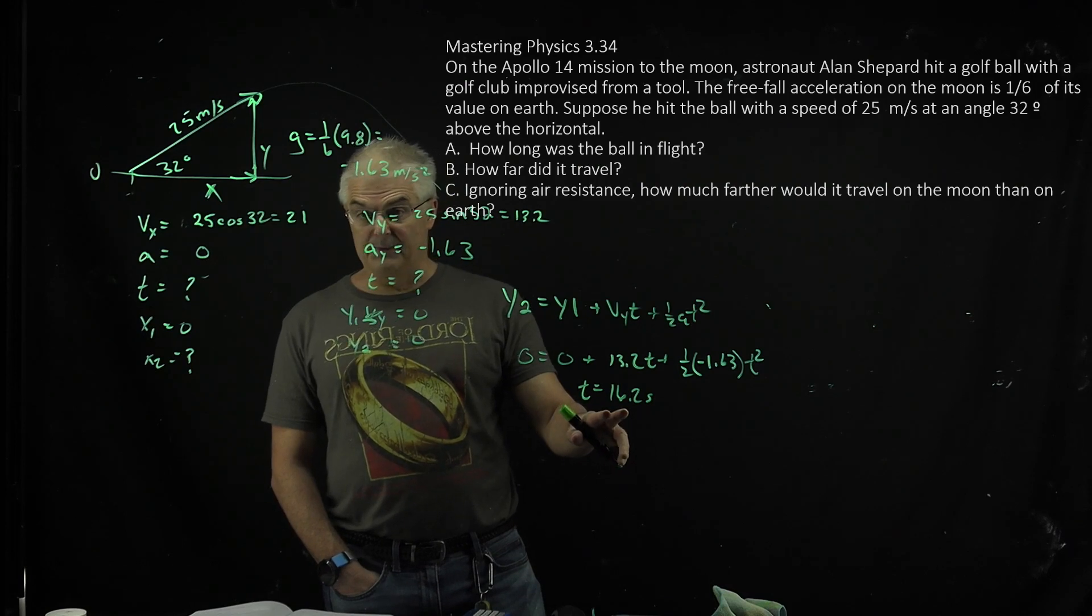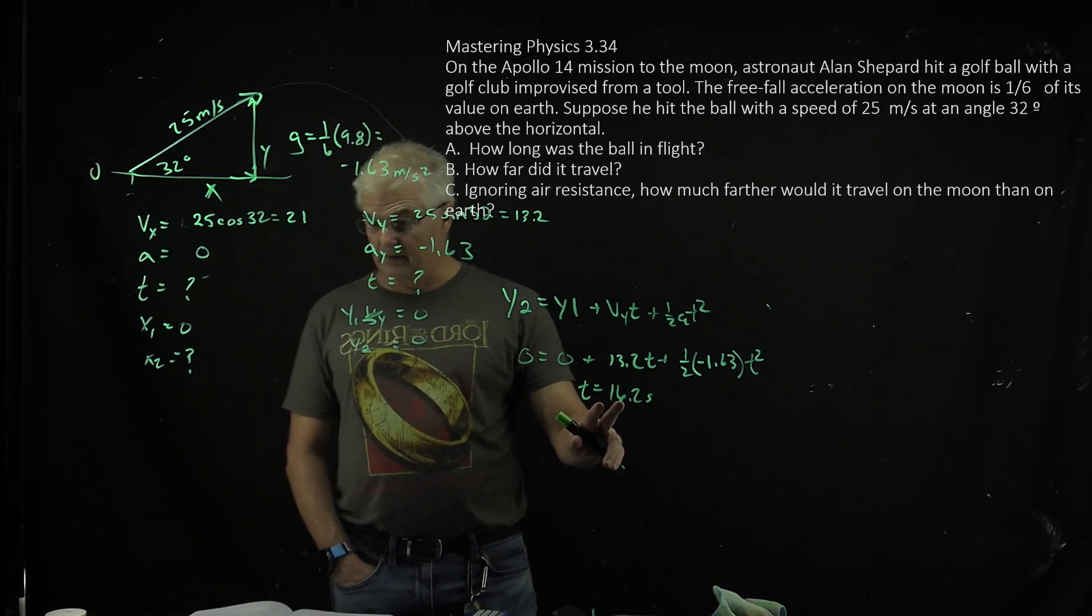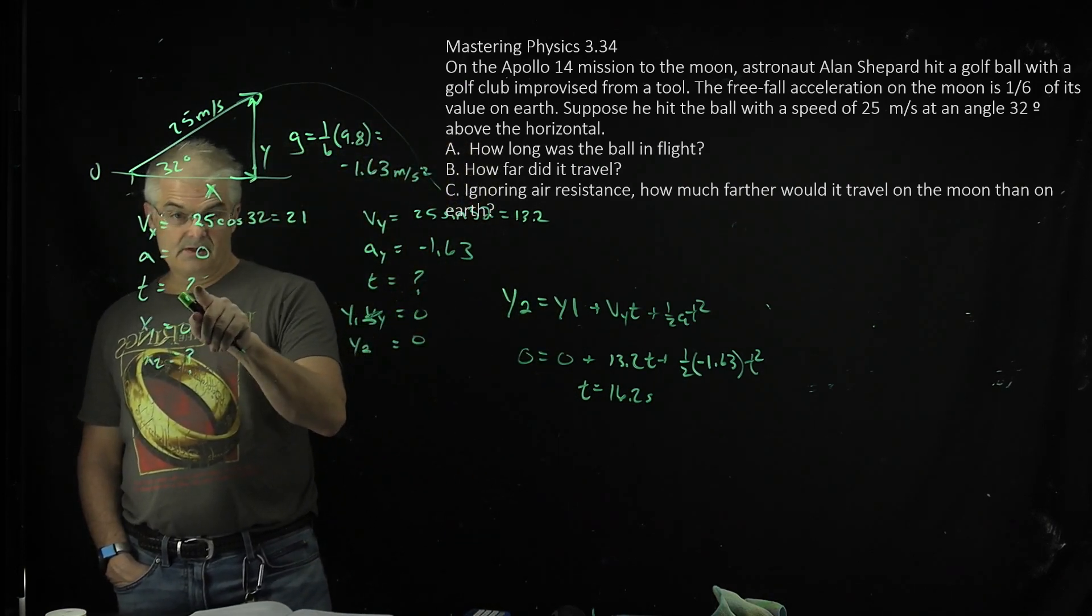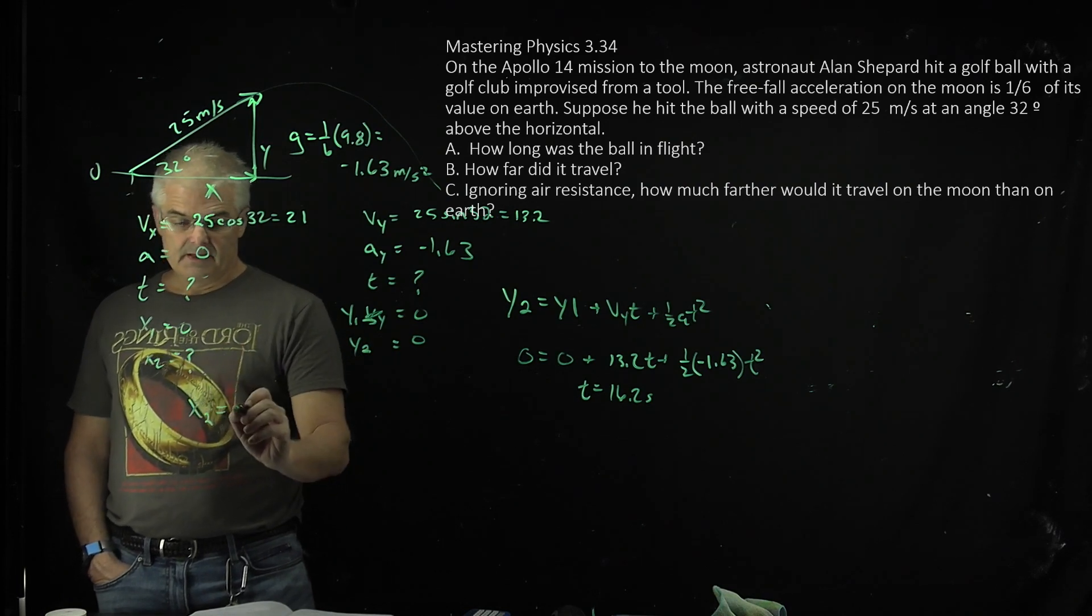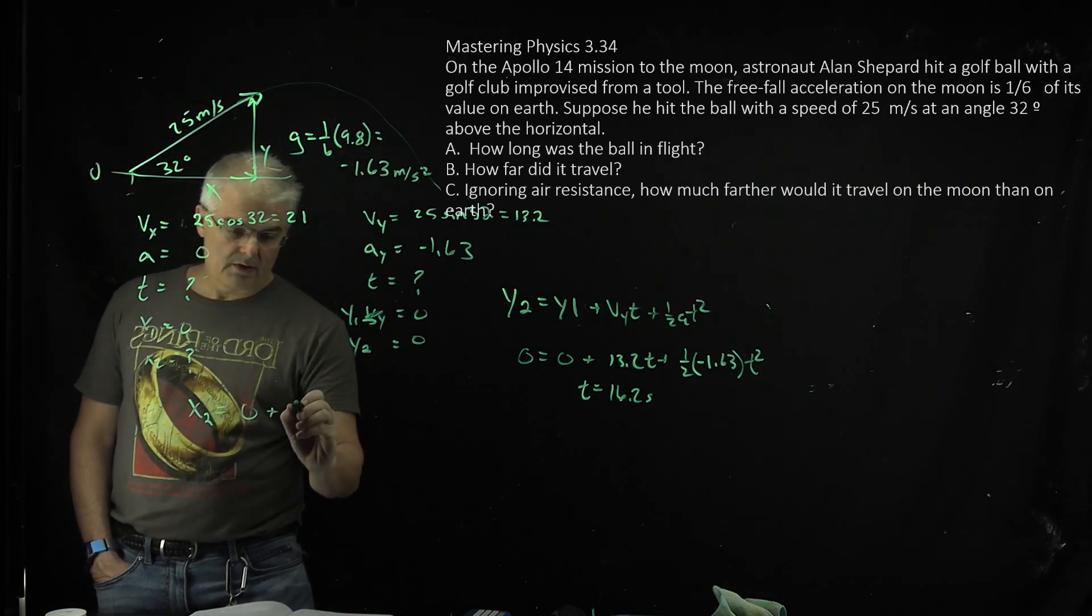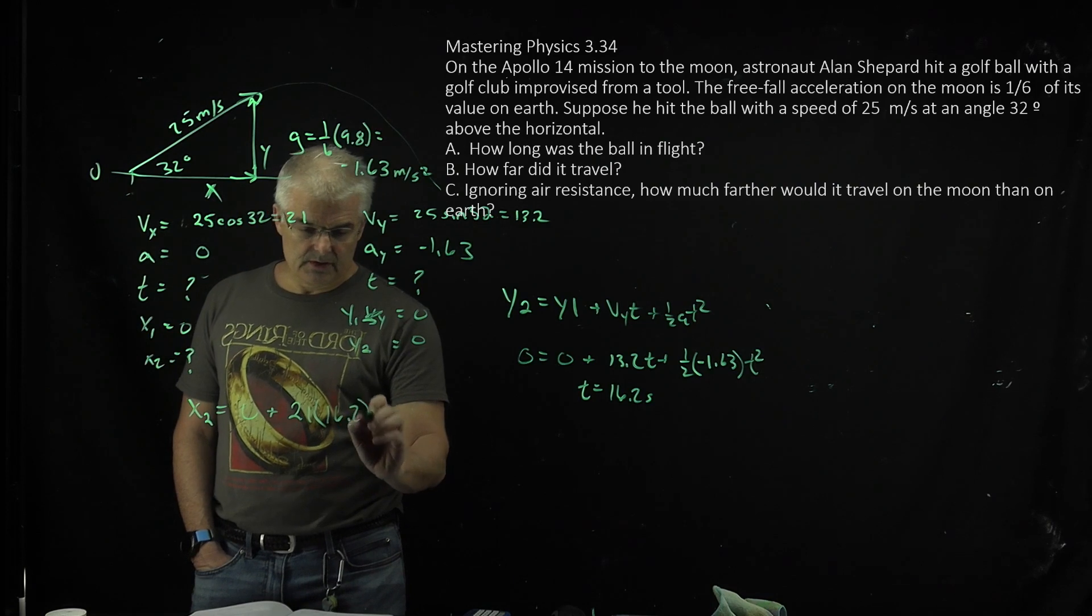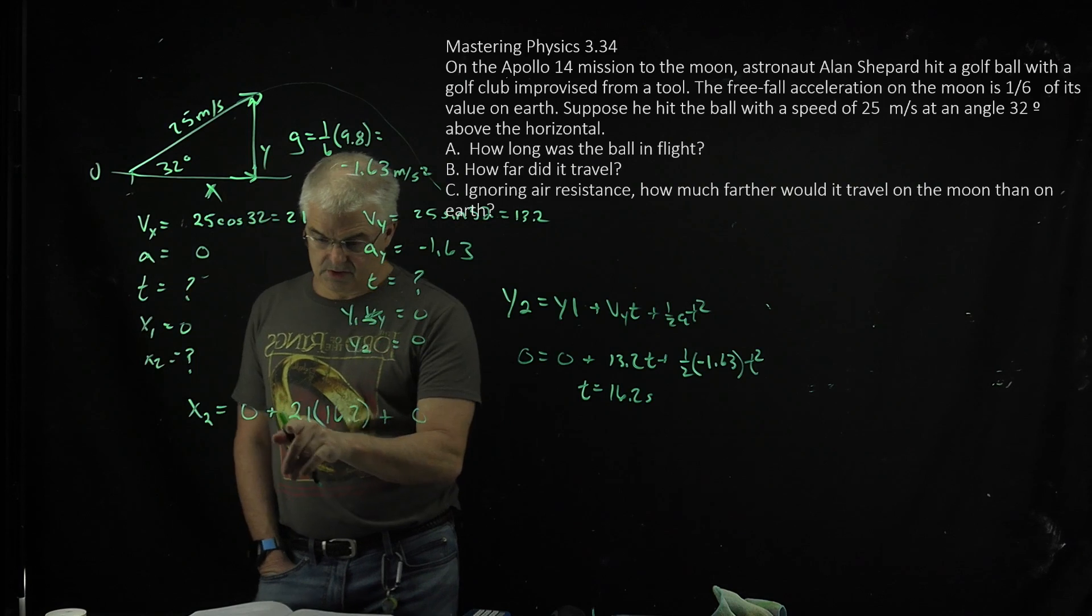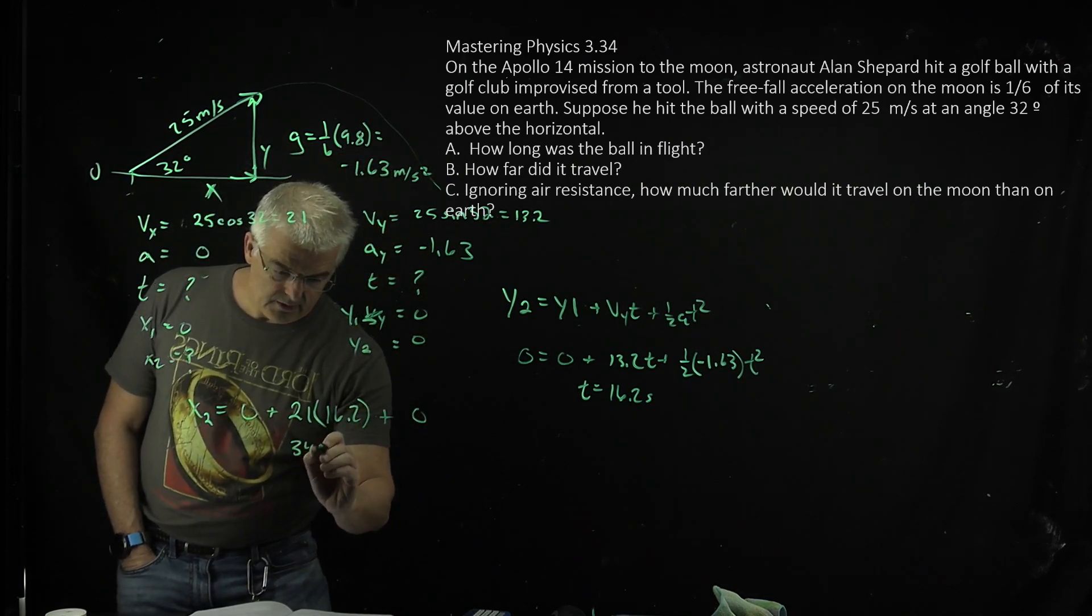And then, so that's the time in flight. How far did it travel? So for distance, now that t right there pops over to the t here which is 16.2. So you're going to say x2, you don't know that, equals 0 plus 21. Now we know the time, 16.2 plus and then 0 because acceleration, 0.5 at squared. So you just take 21 times 16.2 and you get 340 meters.